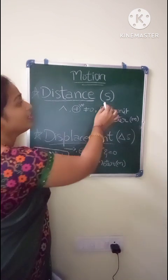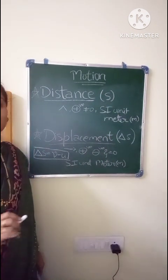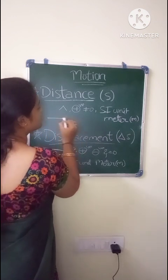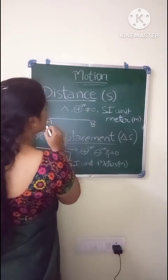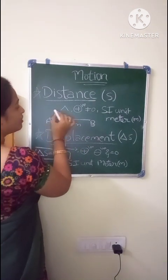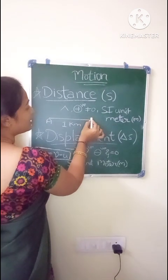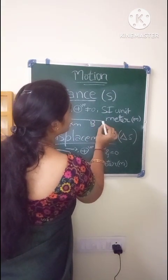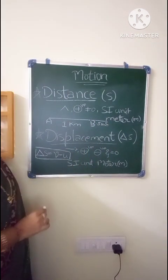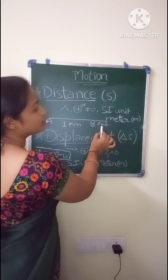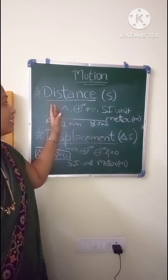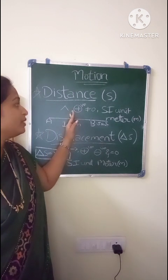Distance is denoted by the small letter s. It is the actual length travelled by an object. For example, let the distance between point A and point B be 1 km. If an object moves from A to B, then from B to C which is 0.5 km, the actual distance covered by the body is 1.5 km. The SI unit of distance is meter. Distance is a scalar quantity and it is always positive and cannot be equal to zero.